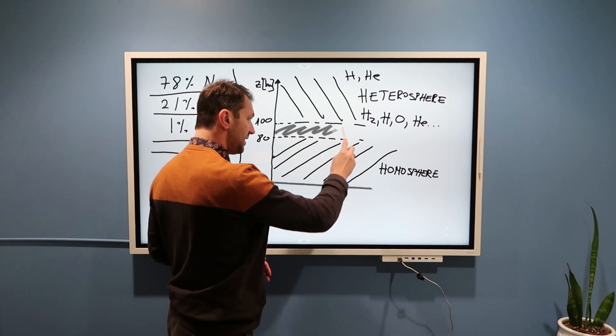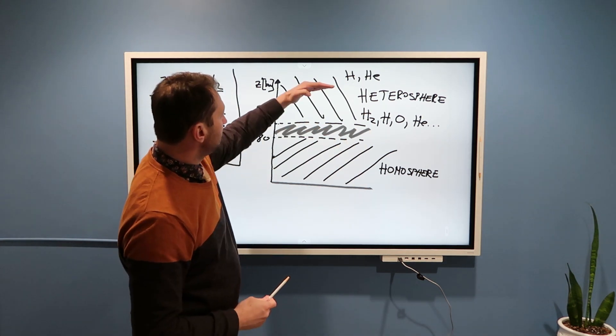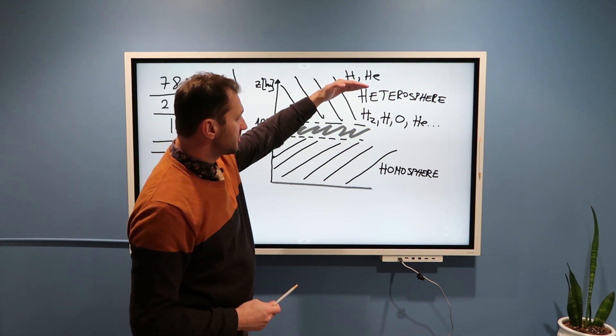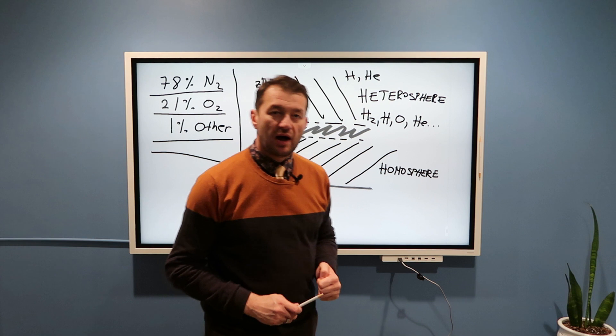This over here is a gray zone, transitional region. Above this region, we have a heterosphere where these percentages do not apply anymore.